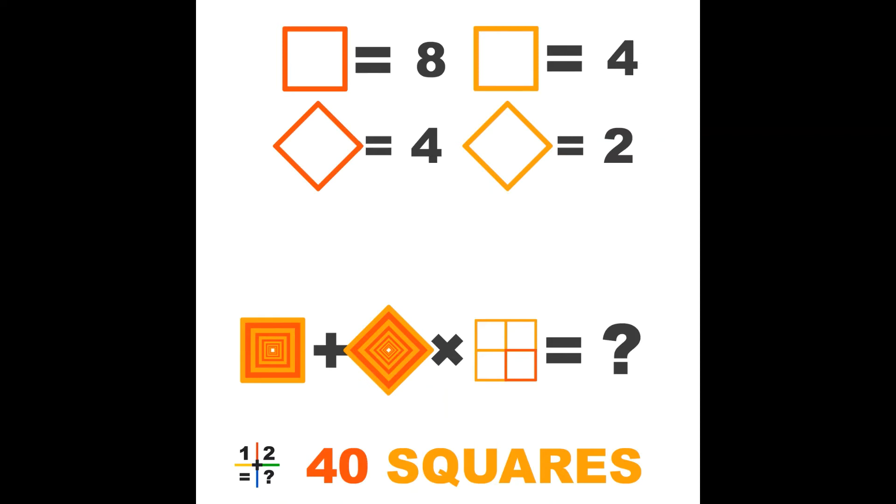Now we have: the yellow square has a value of 4, the orange square has a value of 8, the turned yellow square is half the value of the standing yellow square and that is 2, and finally the turned orange square has a value of 4.